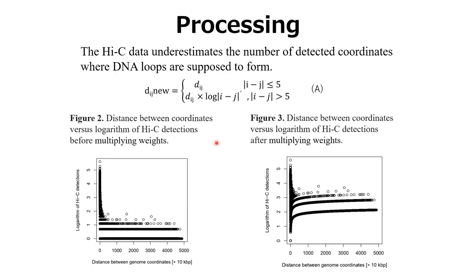So, we multiplied the number of Hi-C detections for distances between coordinates greater than 50,000 bp by a distance-based weight — that is Formula A. By doing this, we converted a vague Hi-C heatmap into a clearer heatmap.